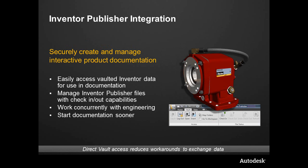With Inventor Publisher, this allows tech pubs to get a jump start or some lead time on creating documentation and illustrations for data that's inside of Vault. This direct Vault access reduces having to email files around or put things up on an FTP share. They can work directly with the data, and even as geometry is updated, they can update it from within Inventor Publisher when they're logged into Vault.